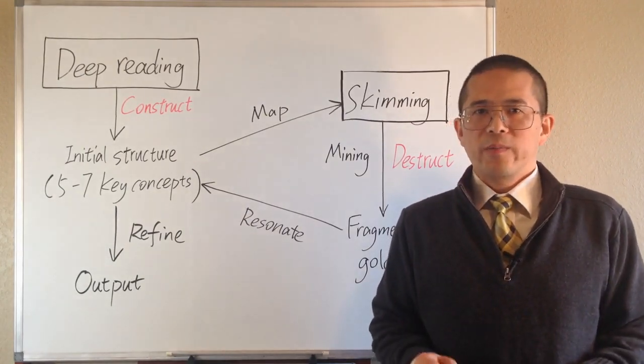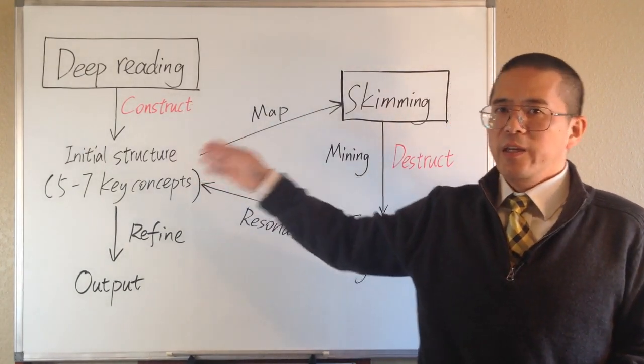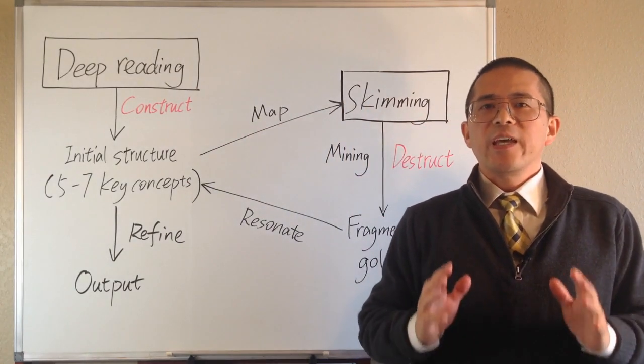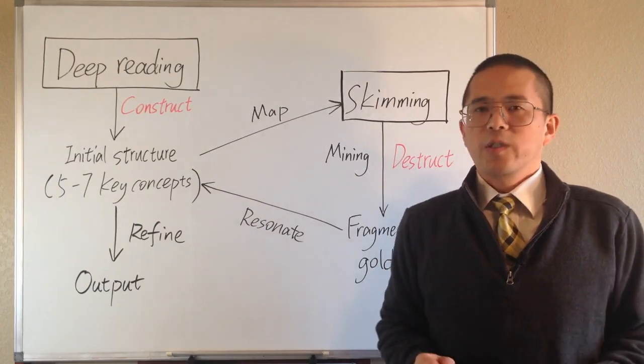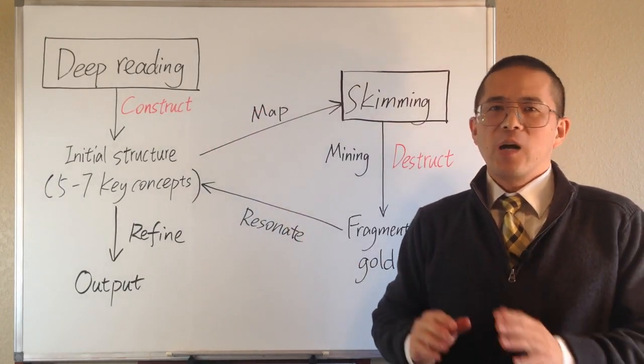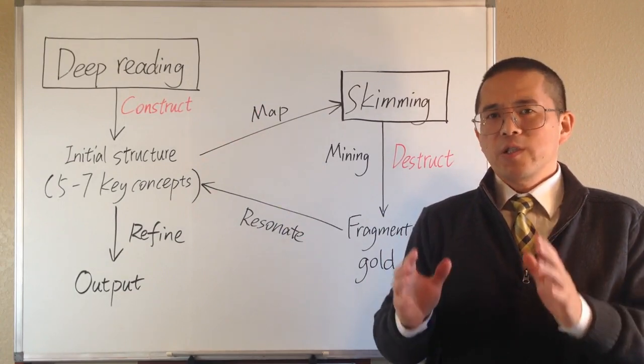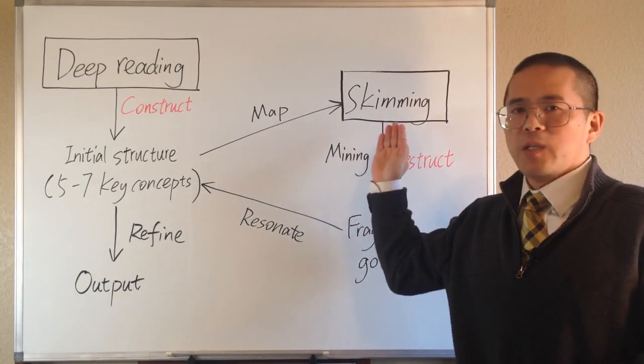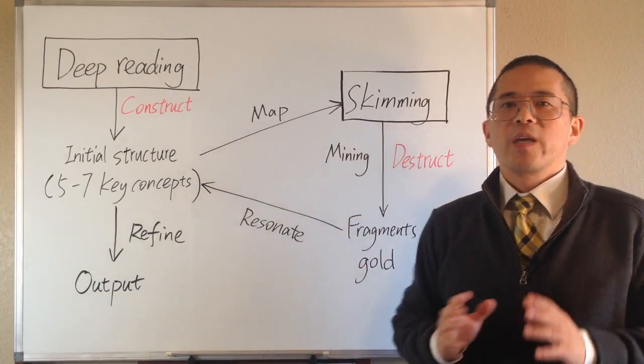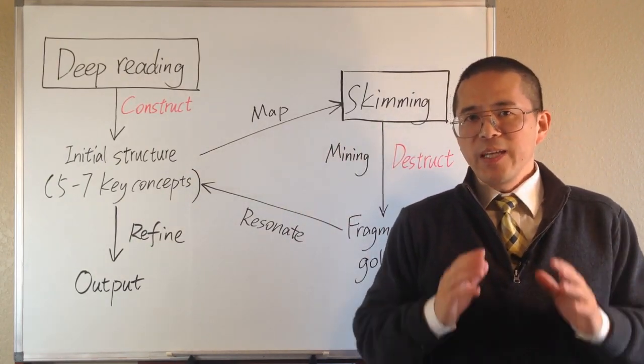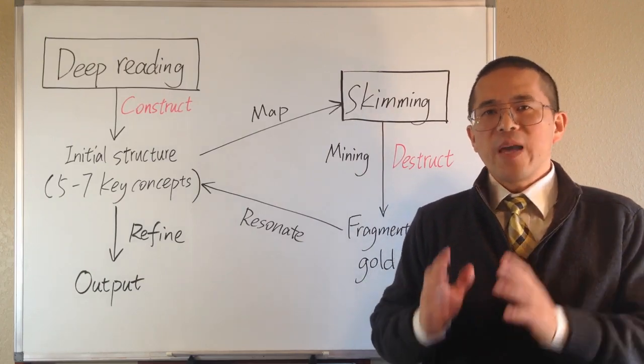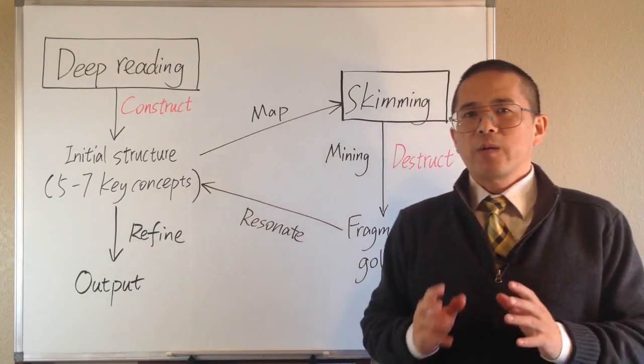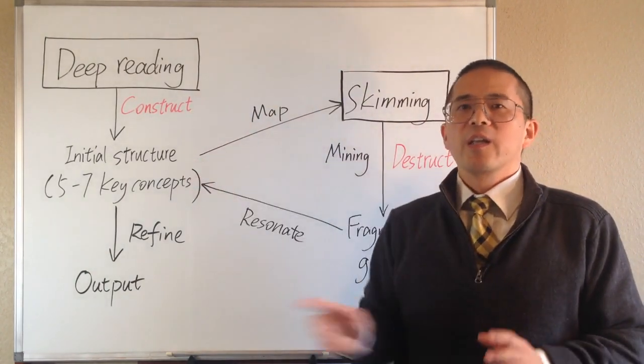Basically, there are two ways of reading. One is deep reading, the other is skimming. Both are great ways of learning. But the trend is, in the age of information explosion, deep reading becomes less common and sometimes a luxury thing for many people. And we are more and more reliant on skimming or fragmented reading to obtain new knowledge. In this video, I will be focusing on the best method for skimming. And I will talk about the method for deep reading in another video.